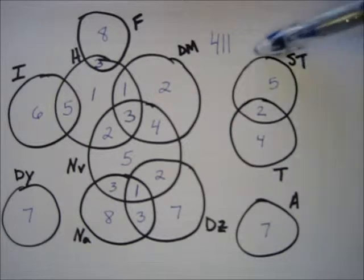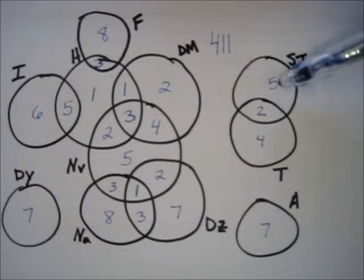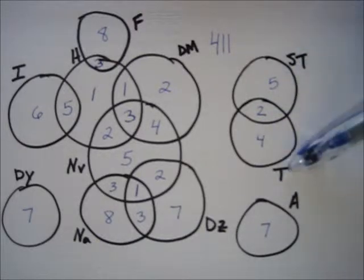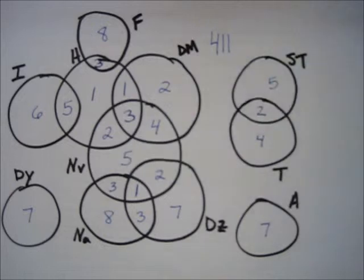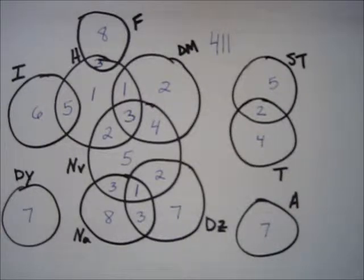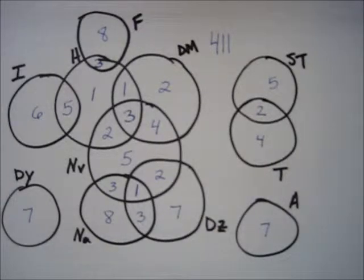Each one of these circles represents a different side effect. For instance, this one represents those with sore throat — five people experienced just a sore throat, two people experienced sore throat and being thirsty, four people experienced just being thirsty. If you have this in your notes, pull it out to reference for the rest of this worksheet, where we'll calculate a bunch of different probabilities and odds statements.